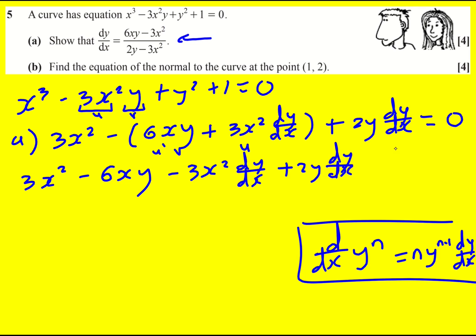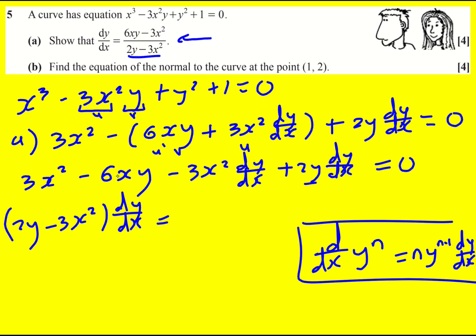Now the question is do I add the dy/dx terms to the right-hand side or move the other ones? I've got 2y minus 3x squared, so it's already in quite a good form. I'm going to factorize it out as (2y minus 3x squared) times dy/dx, then add 6xy onto both sides and minus 3x squared on both sides, because it's just one step away from giving us the answer.